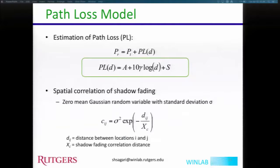When D equals XC in the exponential correlation function, you get a one-over-e factor in the correlation.